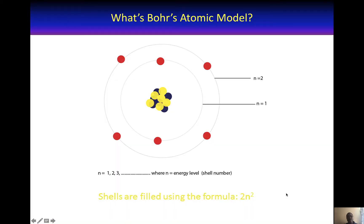In Bohr's atomic model, you have the electrons orbiting around the nucleus. The red dots you see here represent electrons, the yellow dots represent protons, and the blue dots represent neutrons. If you look at this model, the nucleus, which is in the center of the atom, is where the protons and neutrons are located — and the nucleus only takes up a tiny portion of the atom.